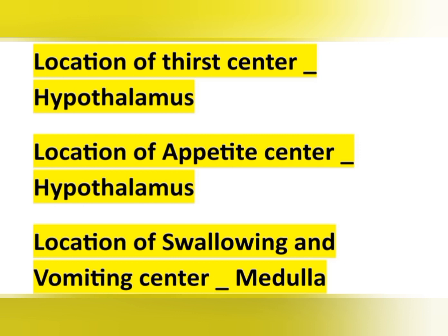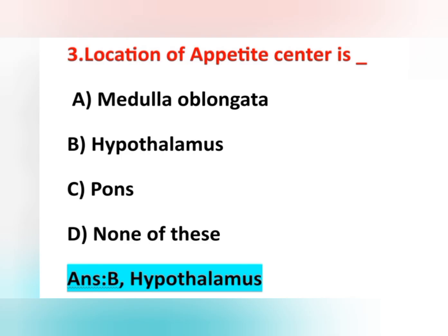The location of the pneumotaxic center is pons, and the location of the apneustic center is also pons. The reflex center for coughing is located in the medulla oblongata. These are all important points. Our answer: appetite center is option B, hypothalamus.